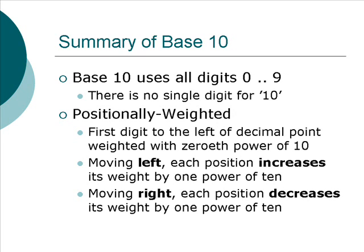To summarize our base-10 number system: base-10 uses all the digits between 0 and 9. Notice that there is no single digit for 10. Instead, we write it with two digits, 1 and 0. It's a positionally weighted number system.